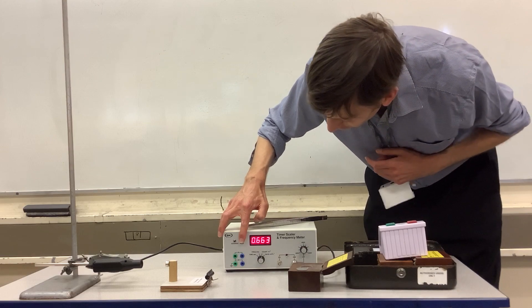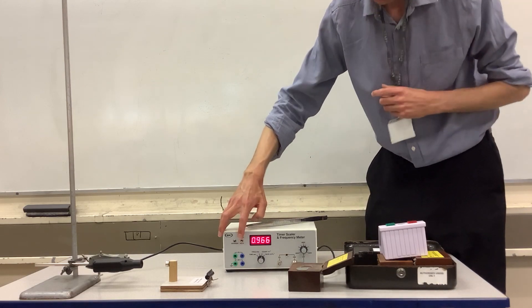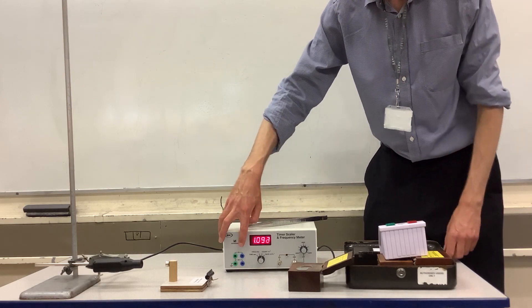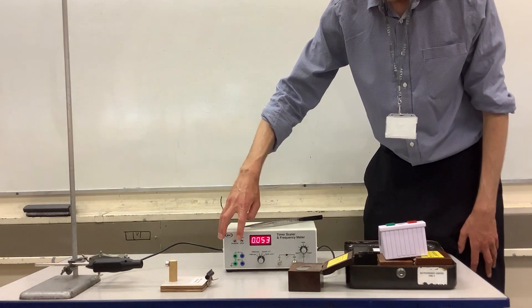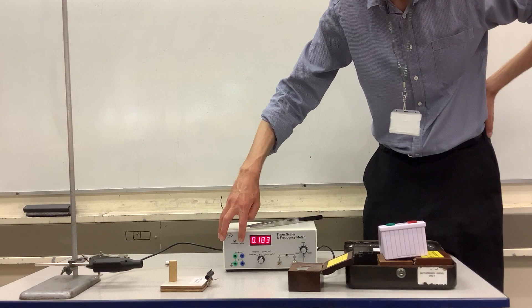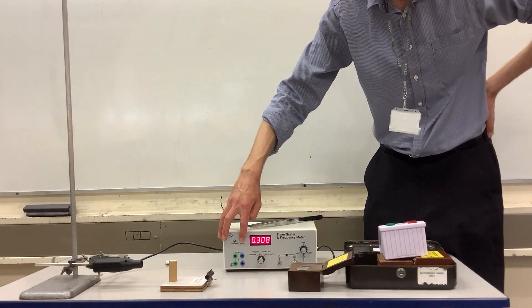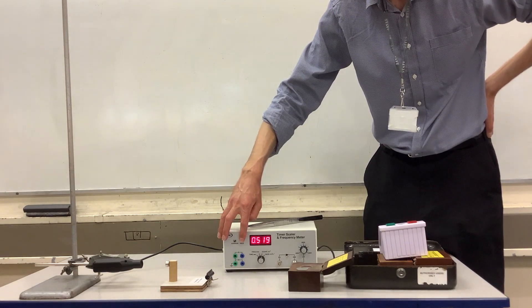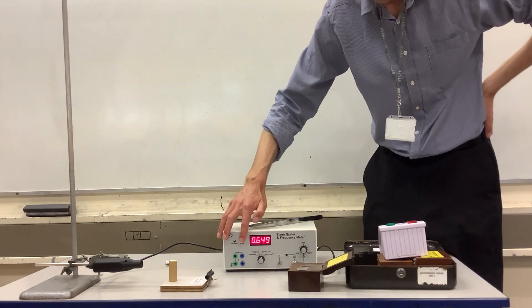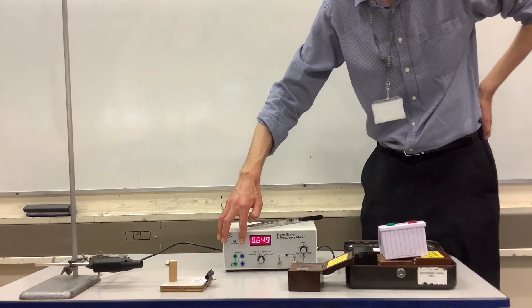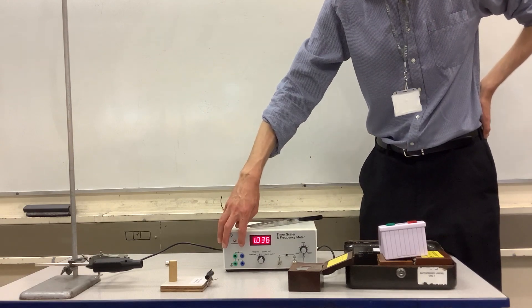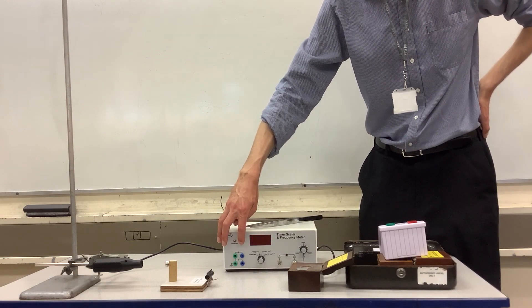We can do the next one and start: one, two, three, four, five, six, seven, eight, nine, stop. That's 649 counts.